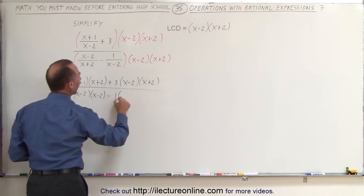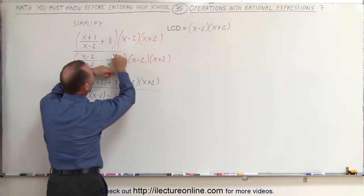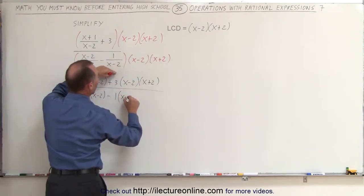Minus 1 time, now here we have x minus 2 cancels with x minus 2. We're left with the x plus 2, so it's 1 times x plus 2.